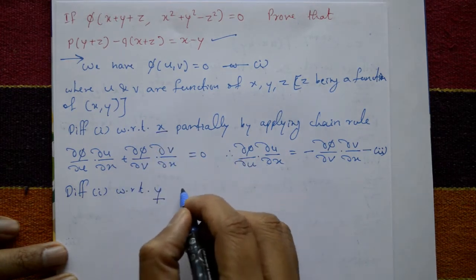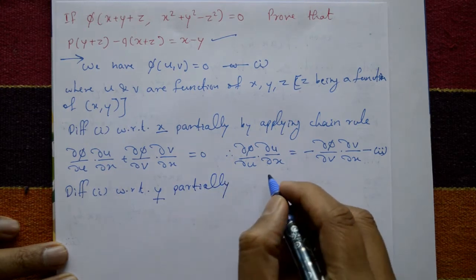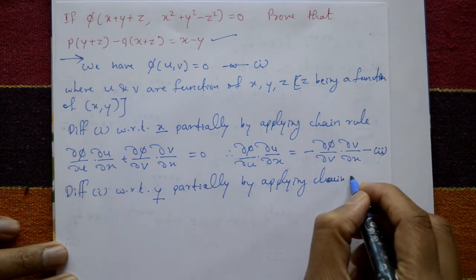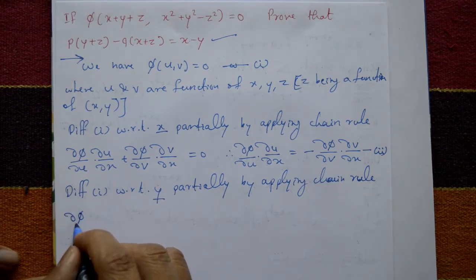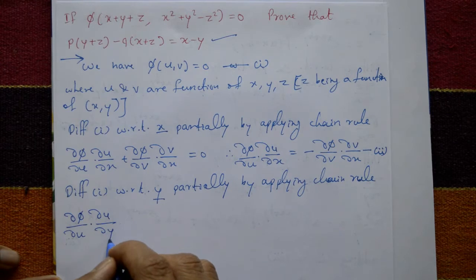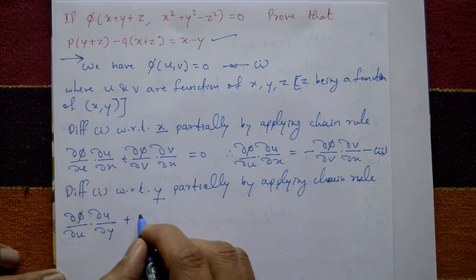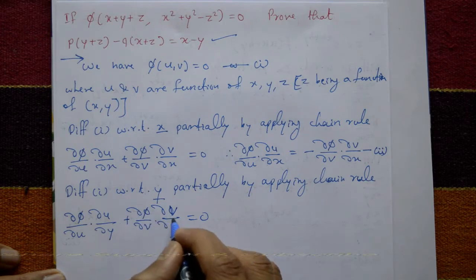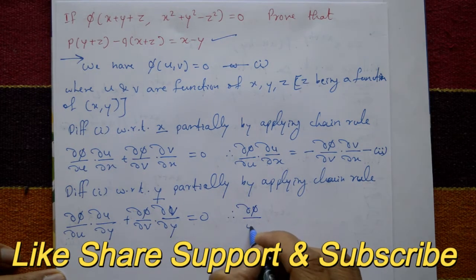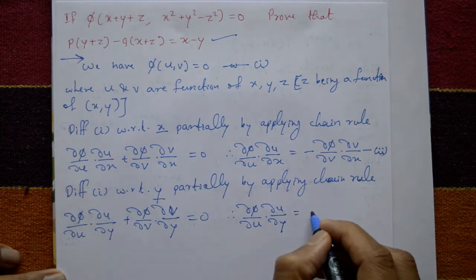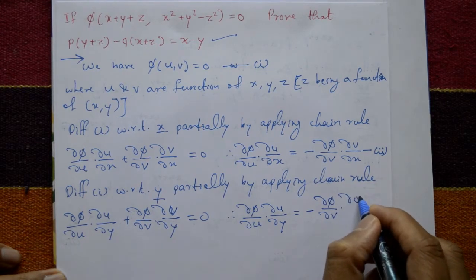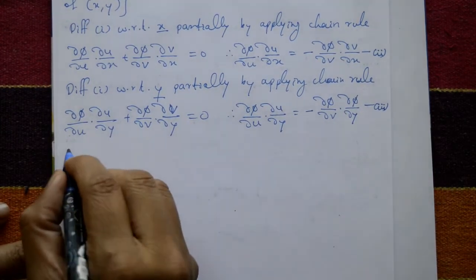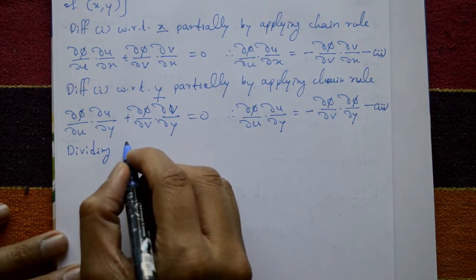Again differentiate equation one with respect to y, treating x as constant, by applying the chain rule: ∂φ/∂u · ∂u/∂y + ∂φ/∂v · ∂v/∂y = 0. Shifting gives ∂φ/∂u · ∂u/∂y = -∂φ/∂v · ∂v/∂y. Call this equation number three.